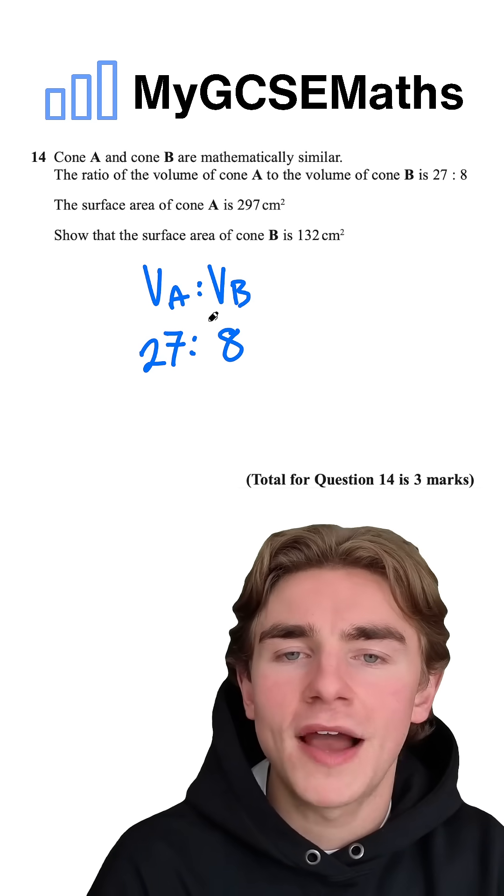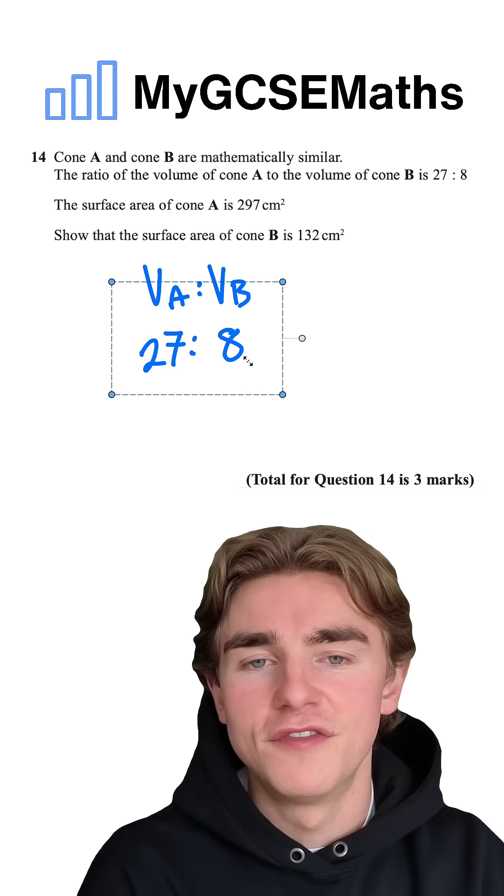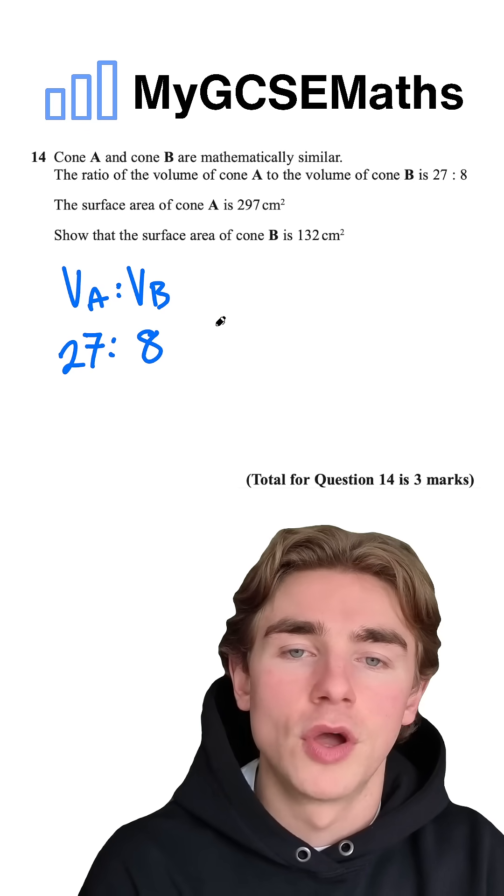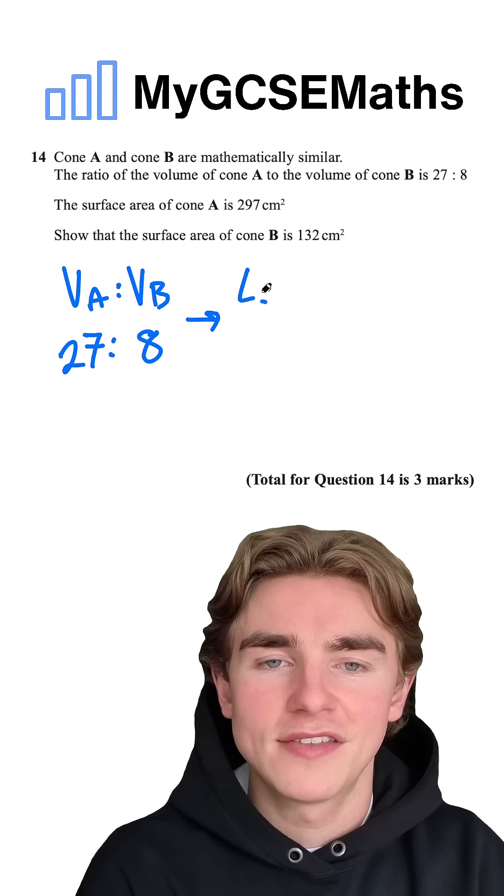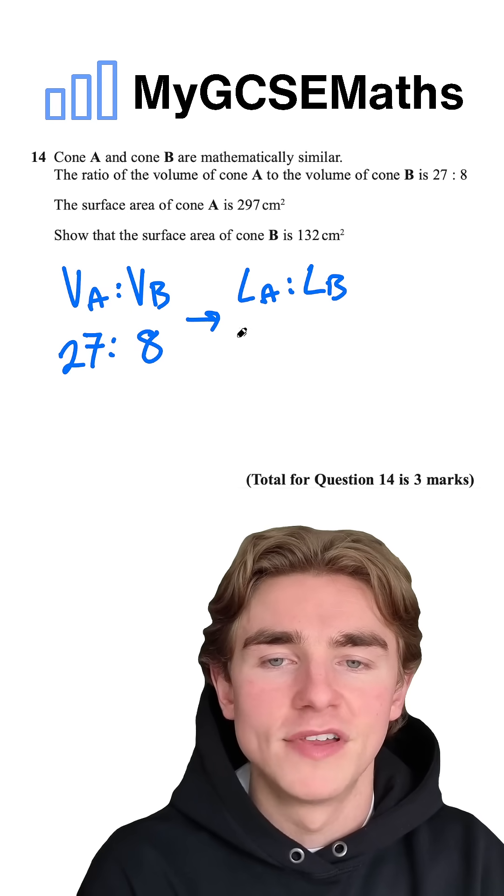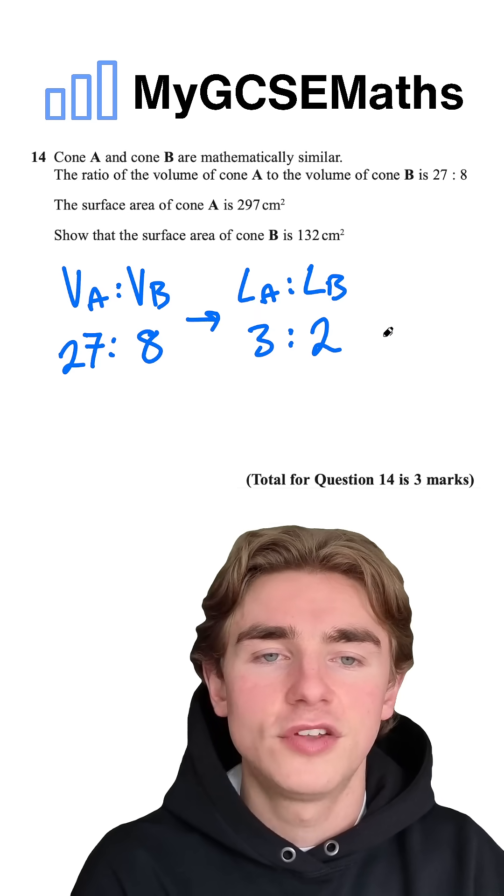So I'm working out firstly the ratio in side lengths. To get from the ratio in lengths to the ratio in volumes, we have to cube our sizes. So in order to go from volumes to lengths, the lengths of A to the lengths of B, we're going to cube root both of our numbers. The cube root of 27 is 3, and the cube root of 8 is 2.